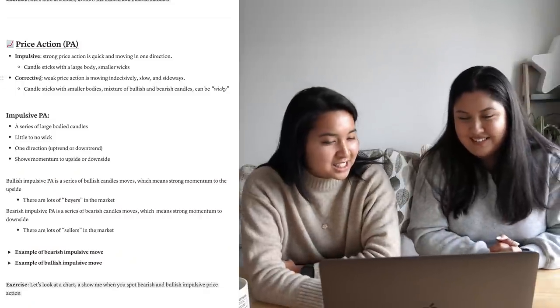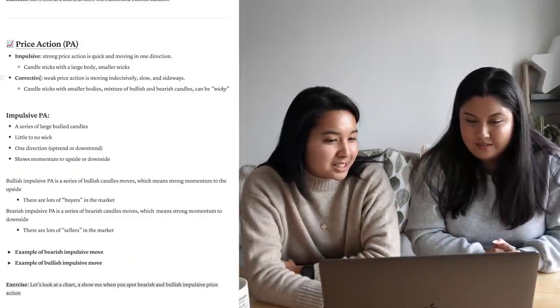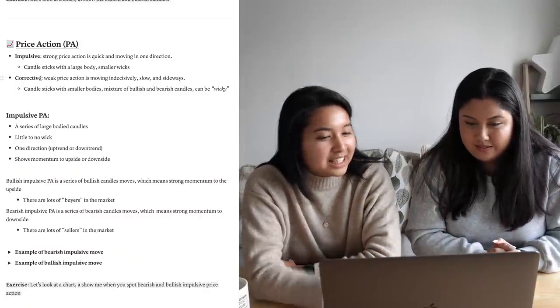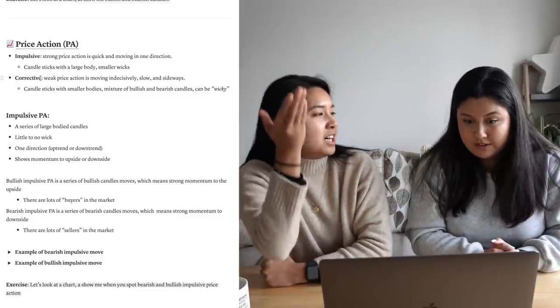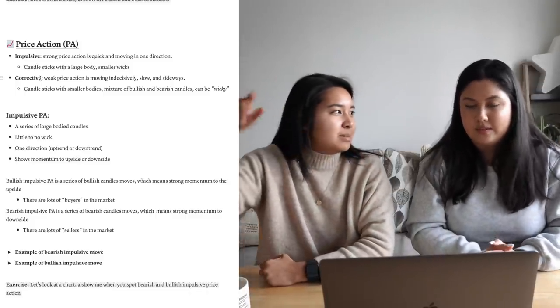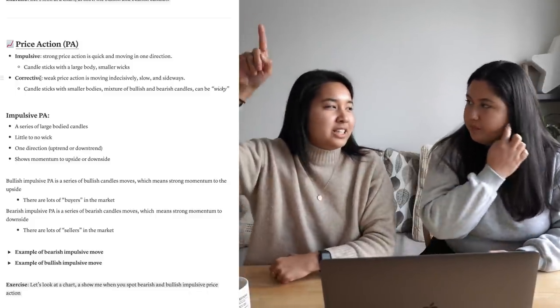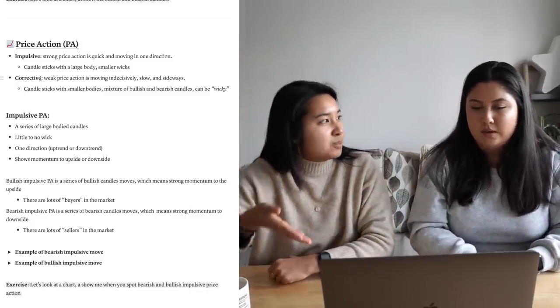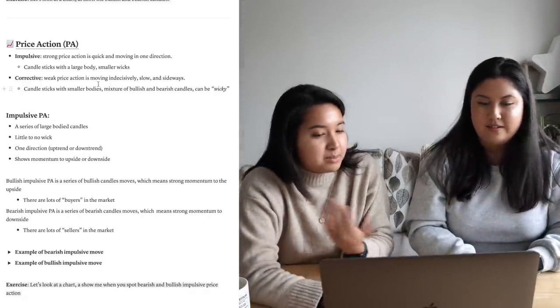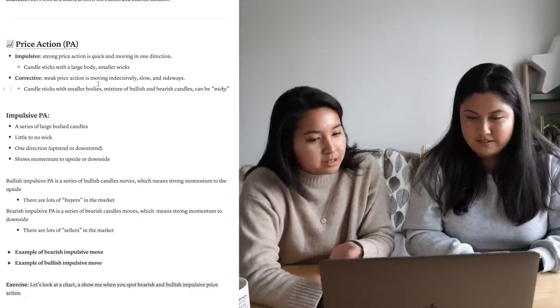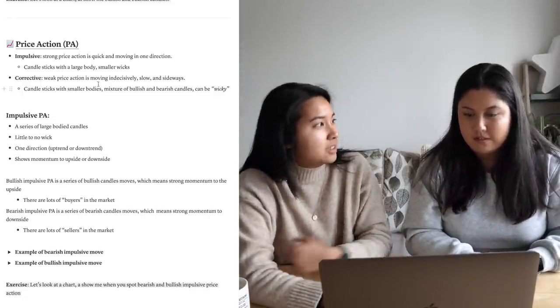Corrective price action is weak price action, moving indecisively, slow, sideways. It can be moving up but taking its sweet time, or moving downwards but not dropping quickly. Candlesticks with smaller bodies, could be a mixture of bullish and bearish, a bit wicky. So it's all about the body of the candle.